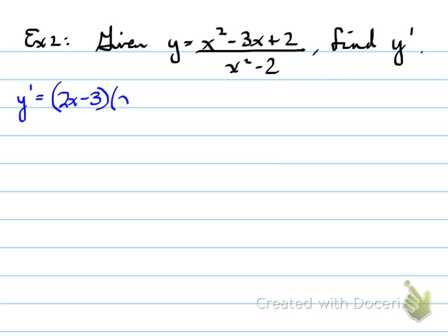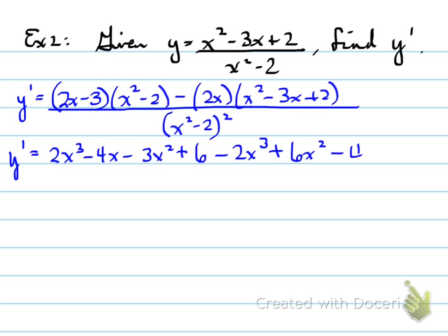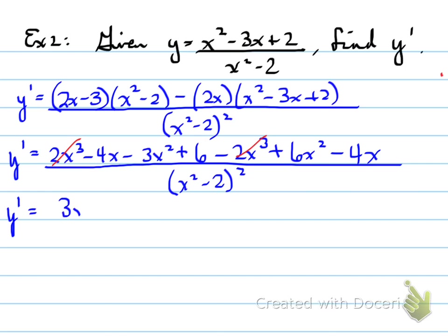Applying the quotient rule: 2x minus 3, which is the derivative of the top, times the bottom, minus the derivative of the bottom times the top, all over the bottom squared. Expanding and collecting like terms, we end up with an answer of 3x squared minus 8x plus 6, all over x squared plus 2, all squared.